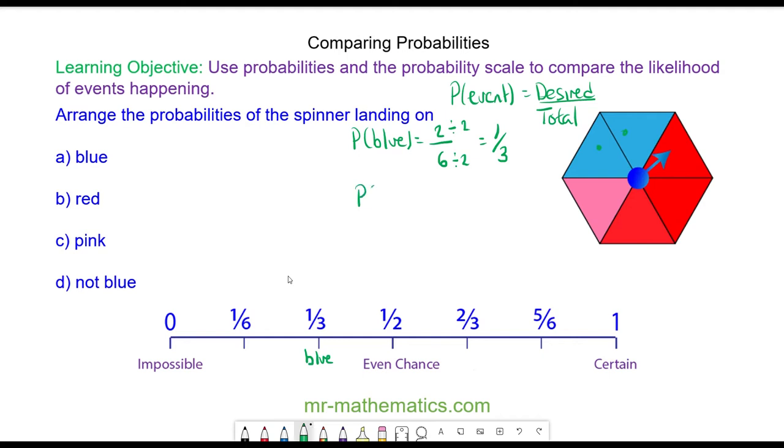The probability of landing on a red section, you can see there are three desired sections with six in total and this simplifies to make one half. So landing on a red would go here.